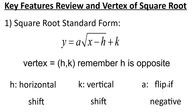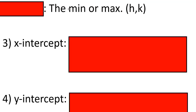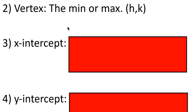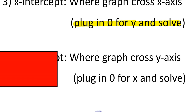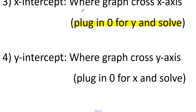k never lies. The a value tells you if it goes downward or opens upward. The vertex is just the min or max — the h,k value, the highest or lowest point. The x-intercept is where the graph crosses the x-axis; to find it, plug in zero for y and solve for x. The y-intercept is where the graph crosses the y-axis; plug in zero for x and solve for y.